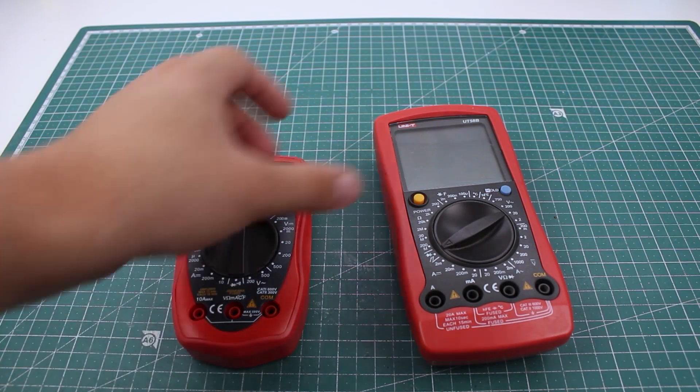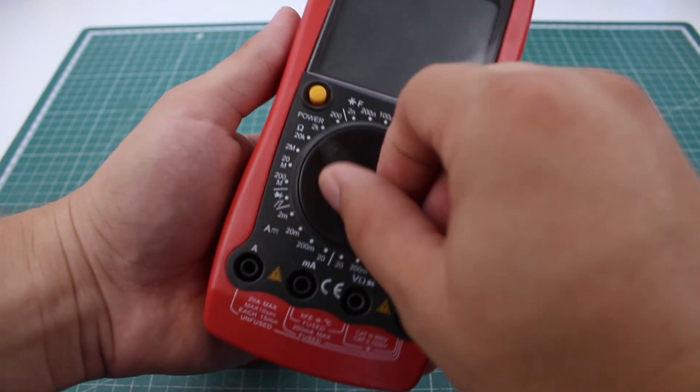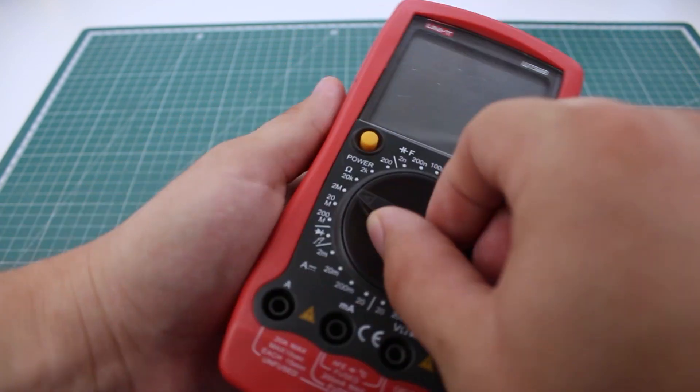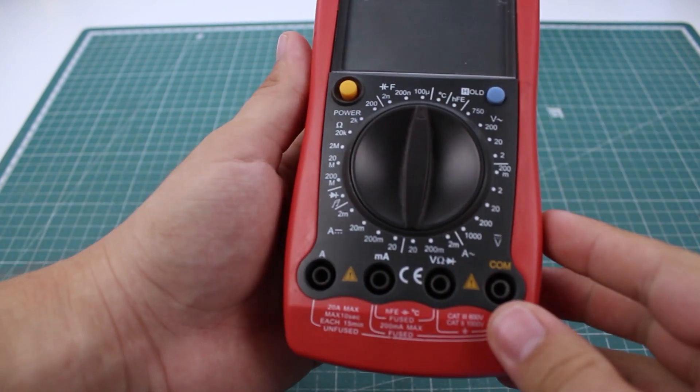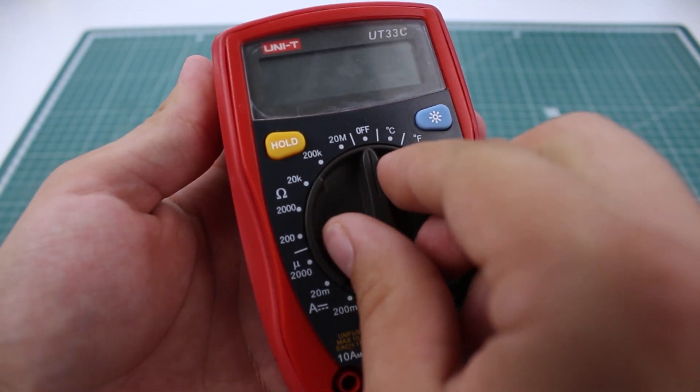These are the two meters I currently have here and to operate them, remove the selector switch on the front. It's used to select different measuring modes and in some cases it's even used as a power switch.